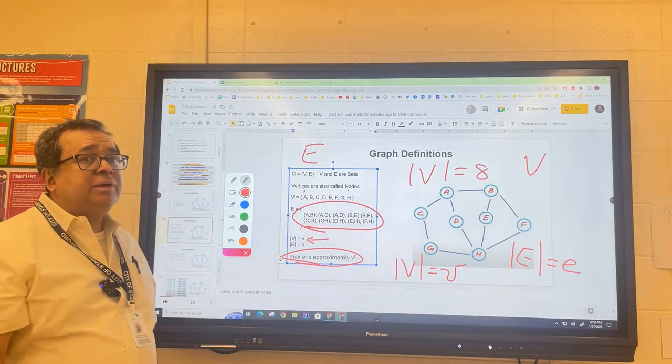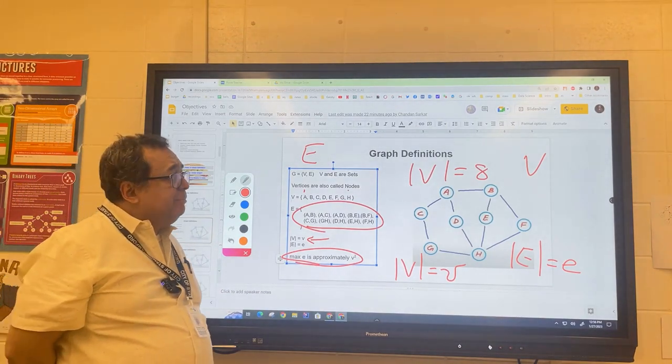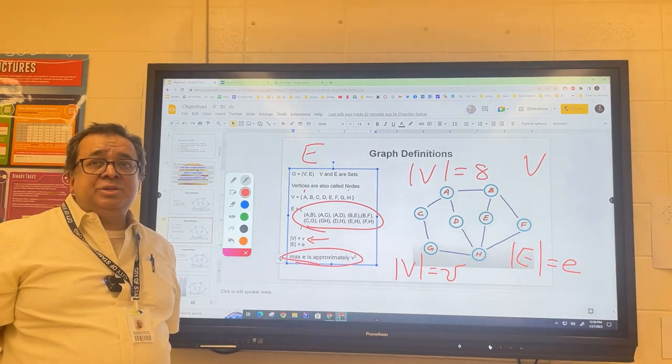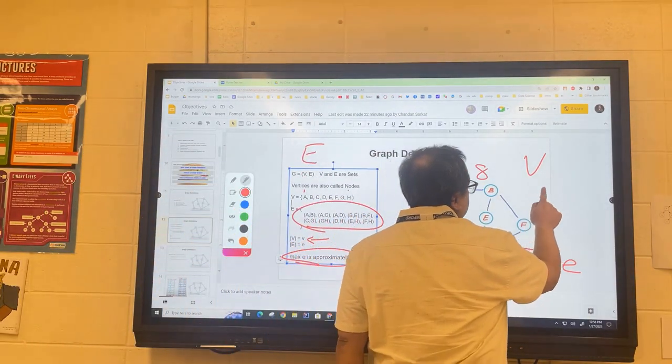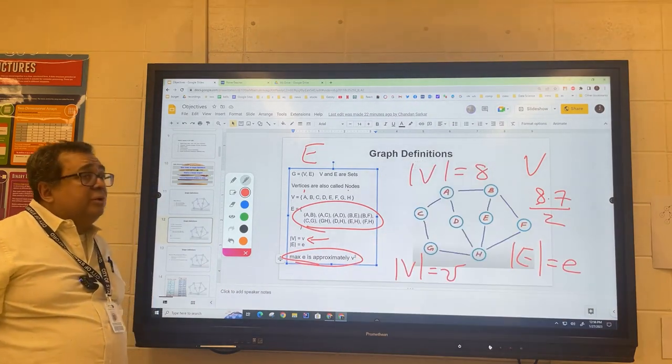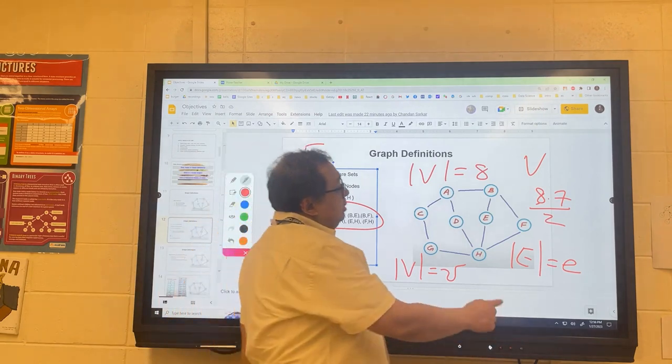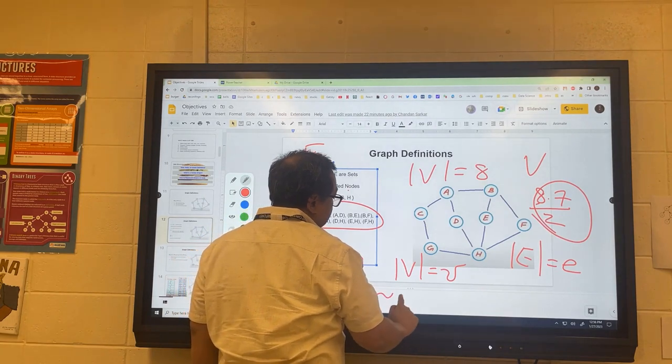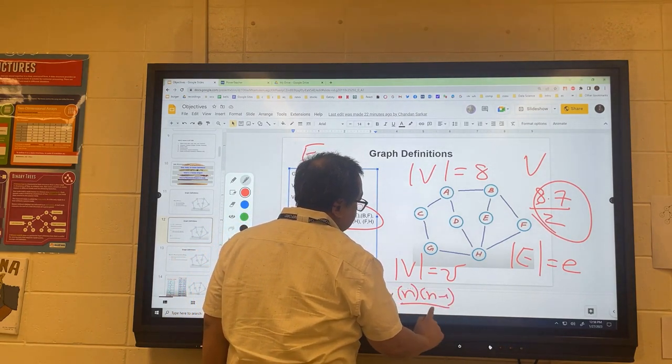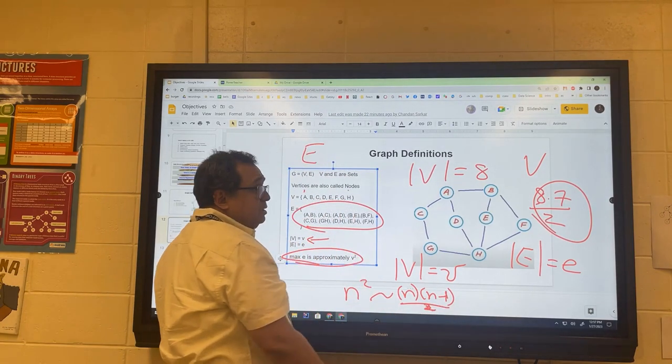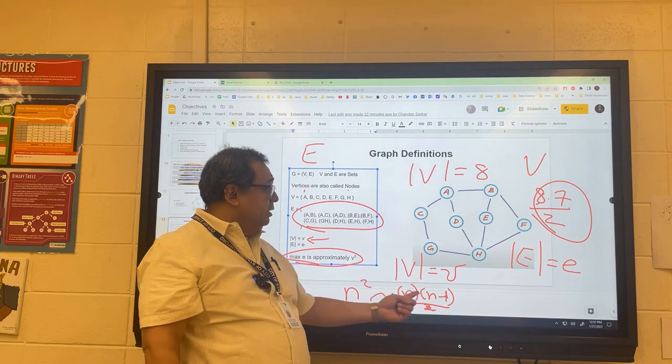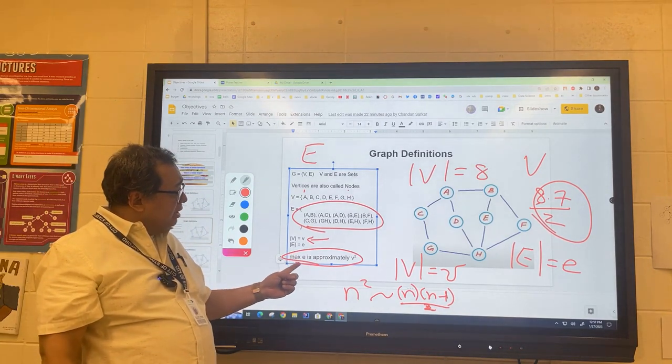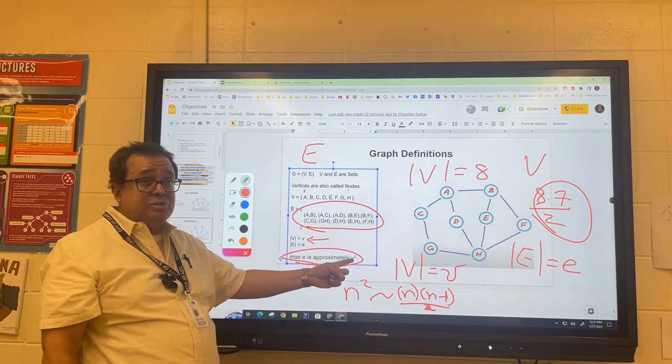I'm talking about simple graphs only. For example, this graph right here, it has eight vertices. What is the maximum number of edges it could have? It would be eight times seven divided by two. You can see here that this number is approximately n squared because the formula is n times n minus one over two. The two can be taken outside the big O, and here you're getting a number that's close to n squared. That's why the maximum number of edges on a graph with v vertices is close to v squared or n squared.